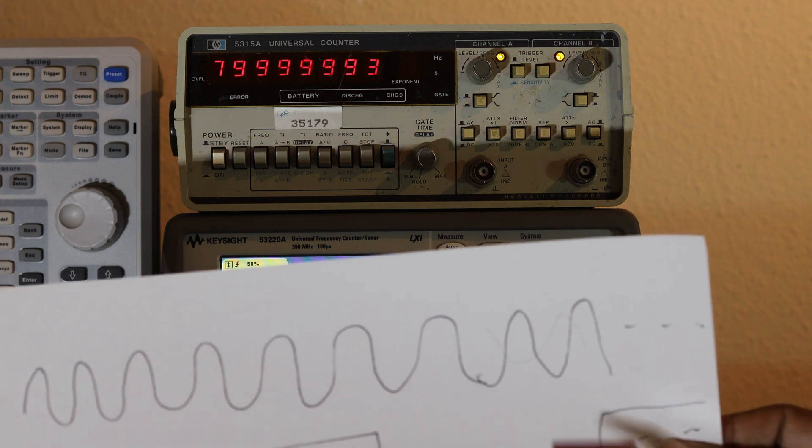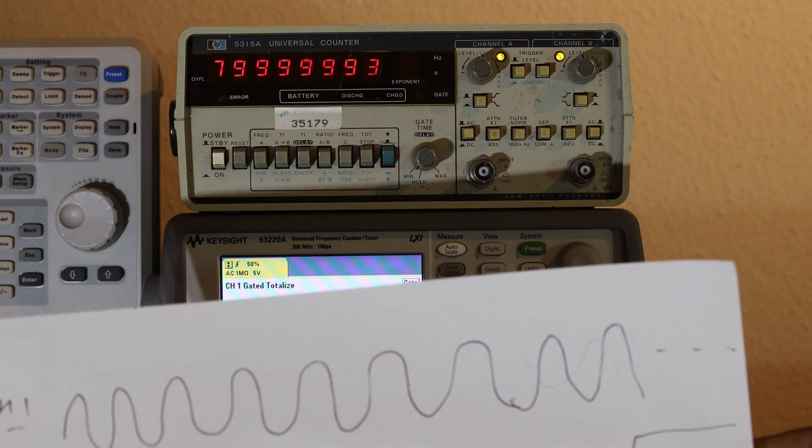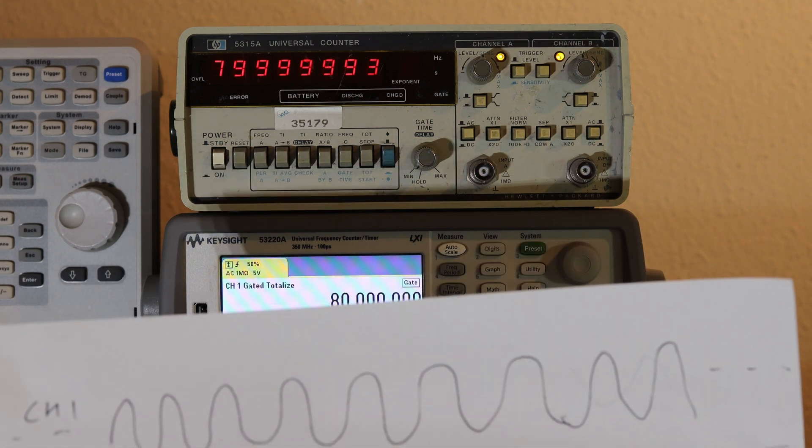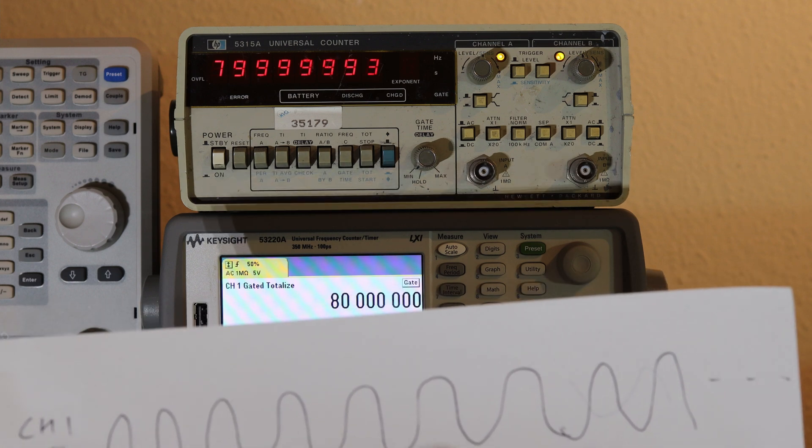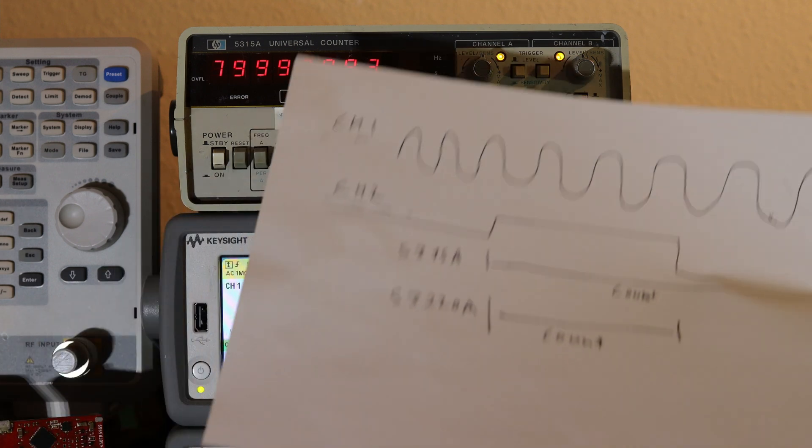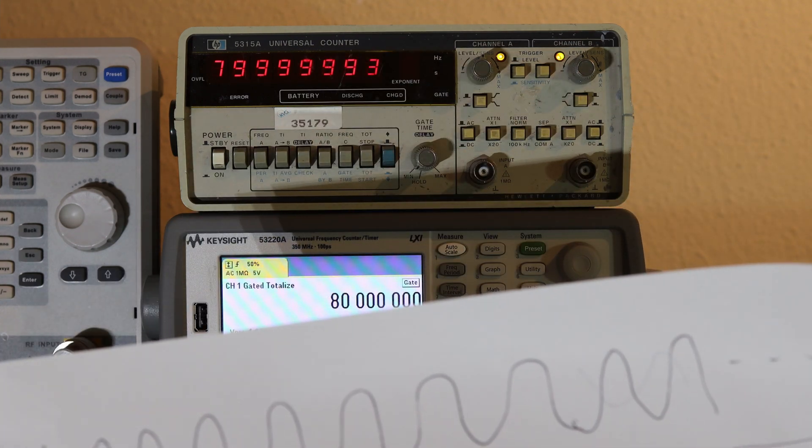Again to go back to the problem. Slow pulses or slow gate time is not an issue. When you try to exceed this specification of 100 microseconds of gate time, this becomes an issue, while 5315A allows any gate time whatsoever.